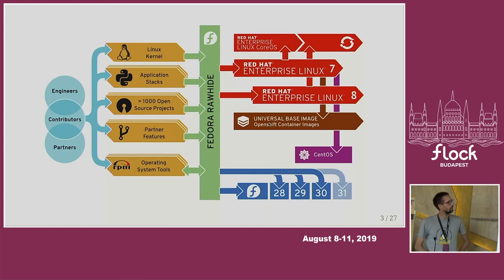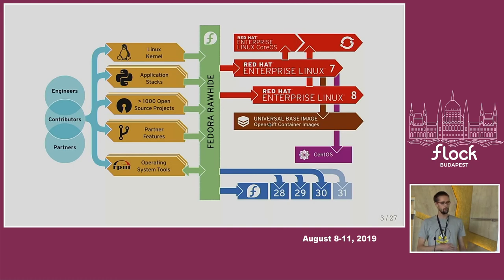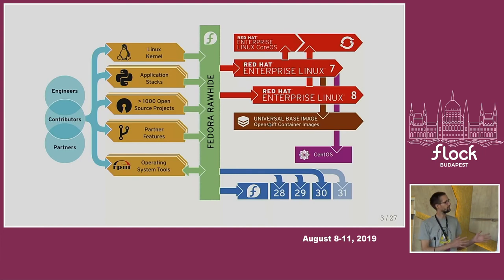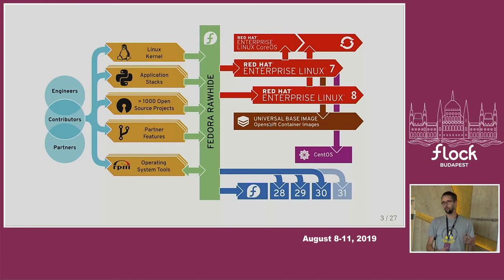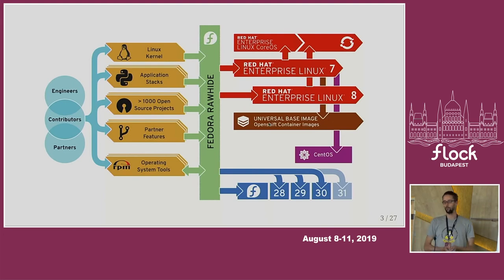Let's start with the why — why we are working on the Packit project, or why we want to bring new upstream releases into Rawhide easily. This is a nice diagram drawn by Steph, which we used at Red Hat Summit. It shows the current flow of upstream developers' work and how it lands into the Red Hat ecosystem — meaning all our operating systems: Fedora releases, Fedora Rawhide, Red Hat Enterprise Linux.